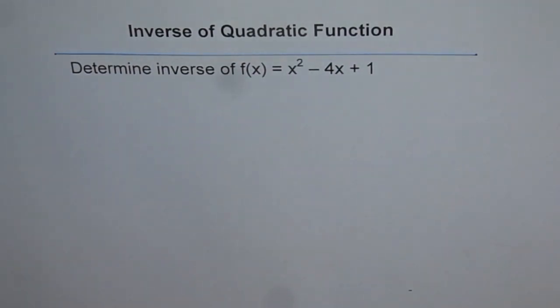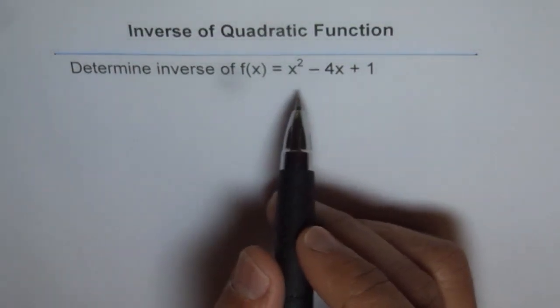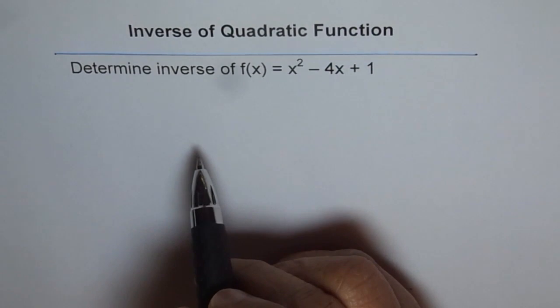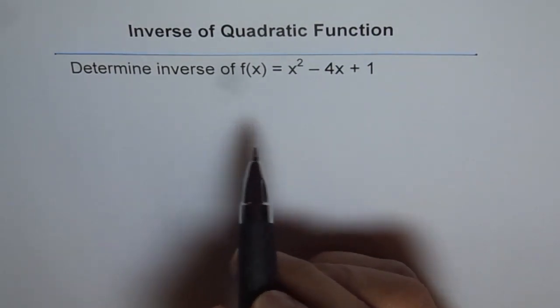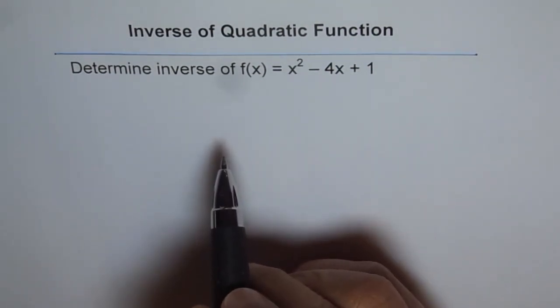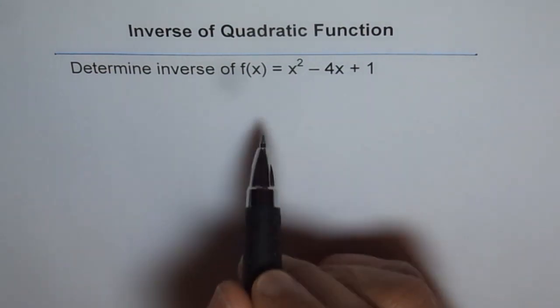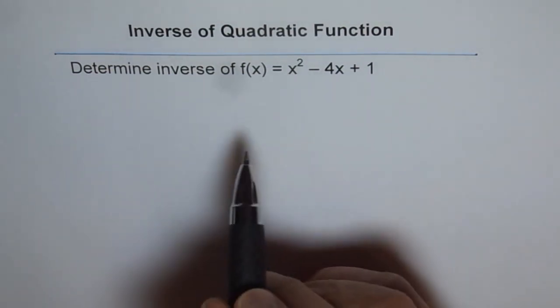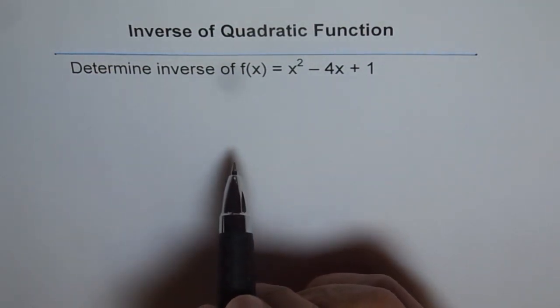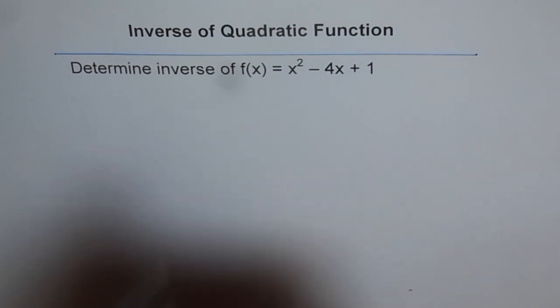Now how are you going to do it? If you swap x and y, then it is very difficult to isolate y. So in such questions, first and foremost thing is to do completing the squares and get this quadratic function in a form which could be algebraically manipulated easily. So we will do that part.